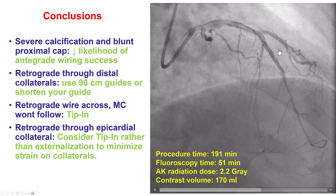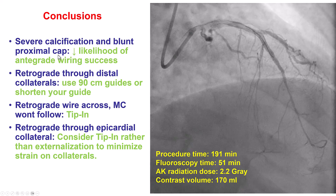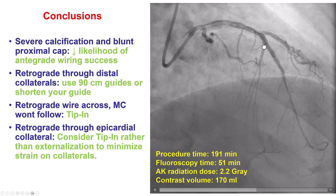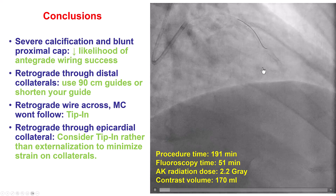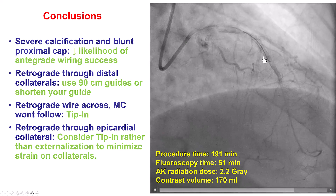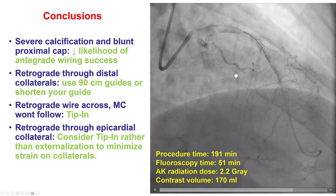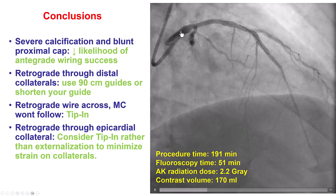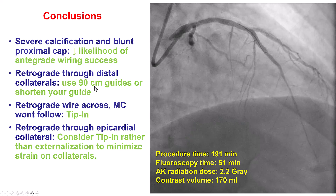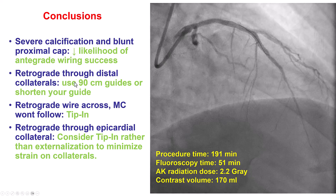Multiple lessons from this case. First, when there is a blunt cap and severe calcification, antegrade wiring can be challenging. Also, if the distal vessel is diffusely diseased and the wire goes extra-plaque, it can be very hard to re-enter the distal true lumen. Second, if going retrograde through a distal collateral or bypass graft, it is important to use short or shortened guide catheters.